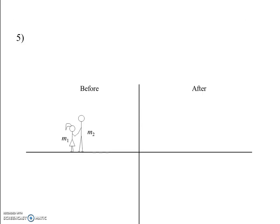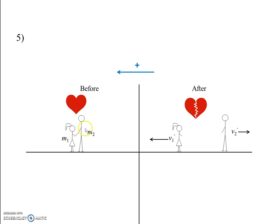Here's problem 5. We've got the boy and the girl standing there on frictionless ice — the girl gives him a shove and they separate. In the after picture, the boy goes sailing off to the right and the girl goes off to the left. We're dealing with vectors, so we need to establish a positive direction. Arbitrarily, let's call left the positive direction, noted above the chart.